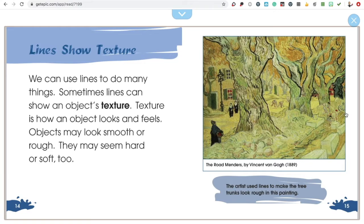We can use lines to do many things. Sometimes lines can show an object's texture. Texture is how an object looks and feels. Objects may look smooth or rough. They may seem hard or soft too.